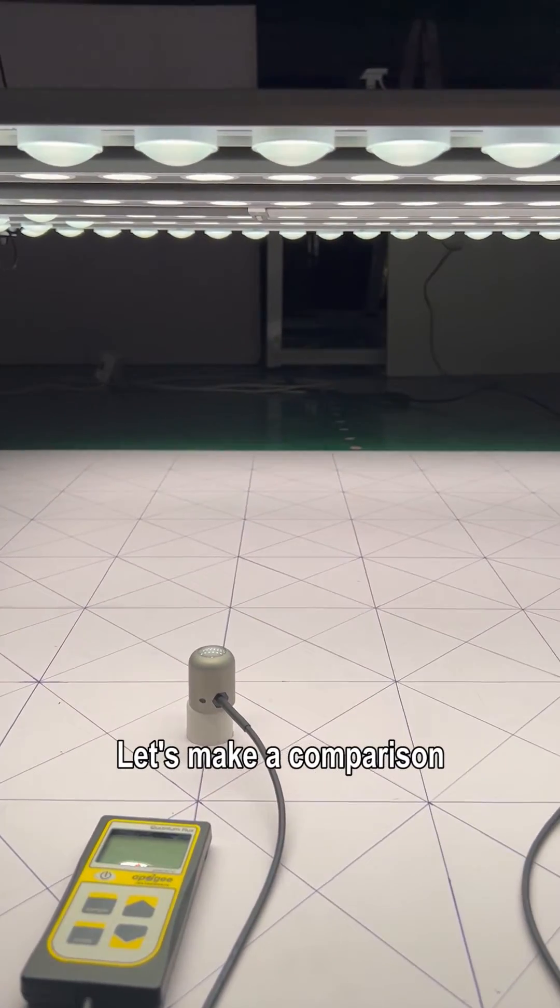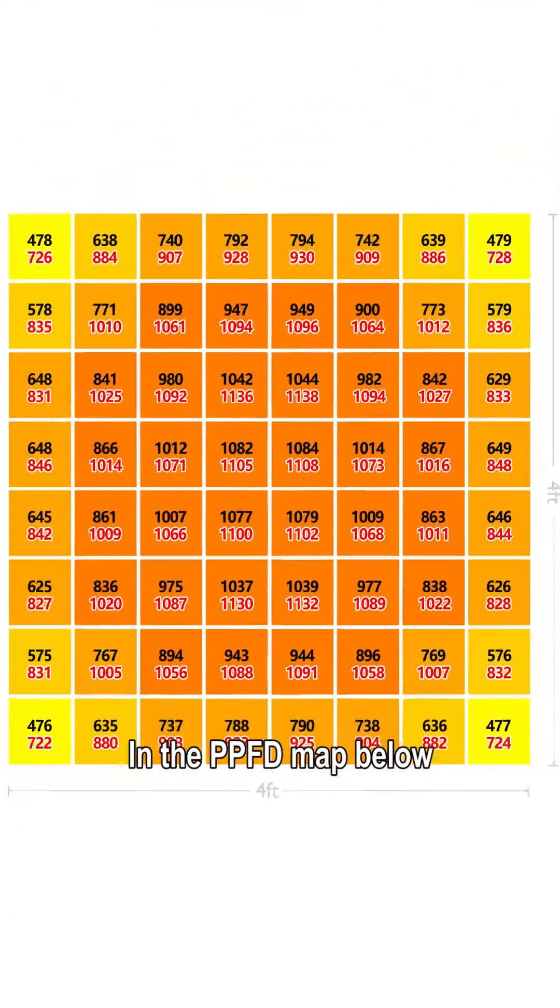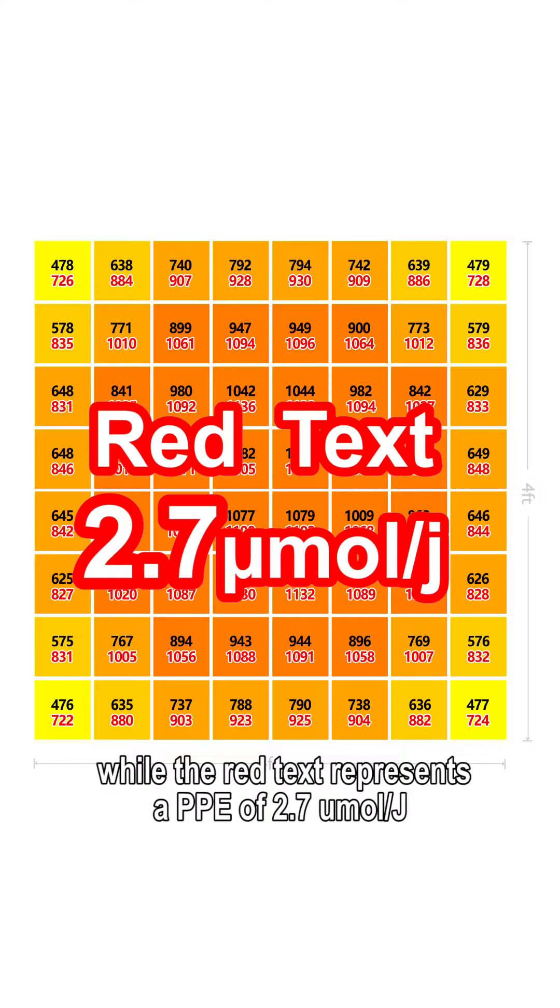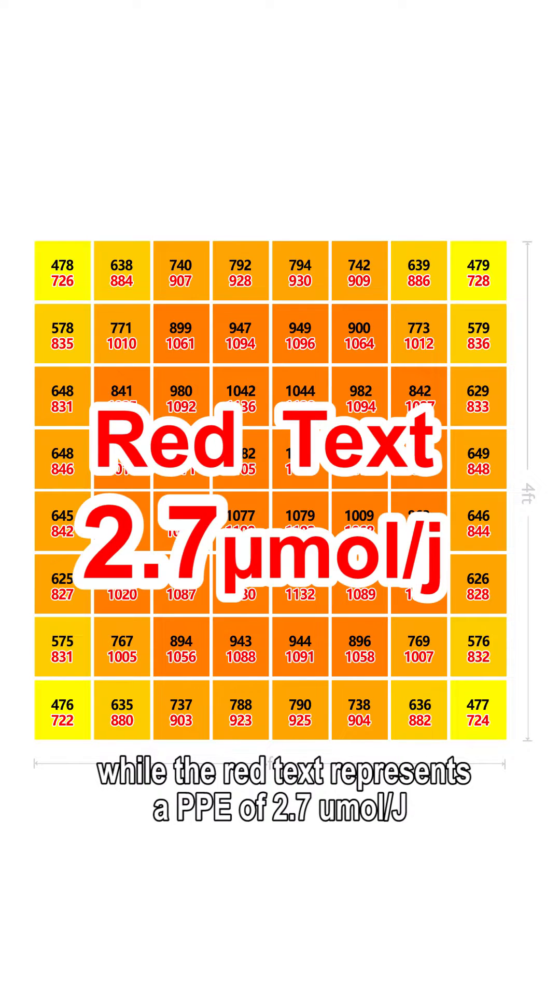Let's make a comparison. In the PPFD map below, the black text represents a photosynthetic photon efficiency of 2.9 micromoles per joule, while the red text represents a photosynthetic photon efficiency of 2.7 micromoles per joule.